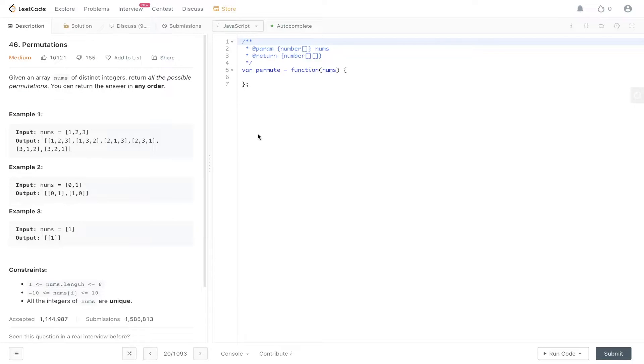LeetCode question 46, Permutations. Given an array nums of distinct integers, return all the possible permutations. You can return the answer in any order. Constraints: nums.length is always going to be greater than or equal to one and less than or equal to six.